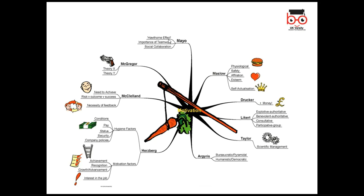Mayo studied the Hawthorne Effect and said some factors can be motivators and some can be demotivators — he called these hygiene factors. Maslow's hierarchy of needs is relevant because in hospitality we deal with humans and we need to understand what needs they have. According to Maslow, if you fulfill people's needs — safety, affiliation, esteem, recognition, self-actualization — they will be motivated.